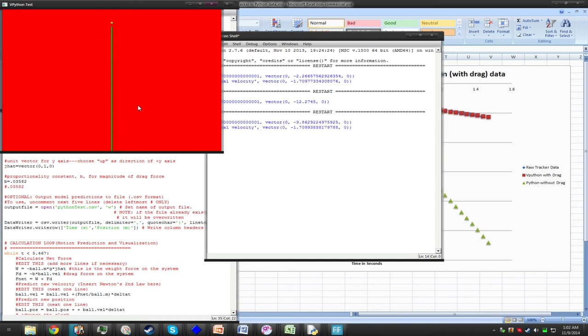After the program is run, we'll see that we still have the same final velocity as we had before we changed the initial velocity, showing that the initial velocity has no impact on the terminal velocity.